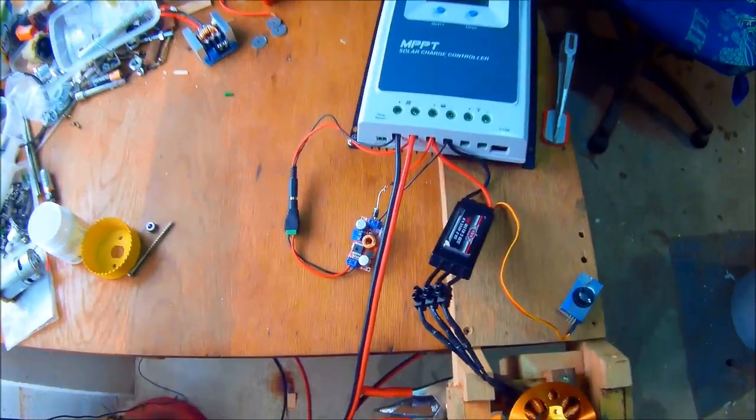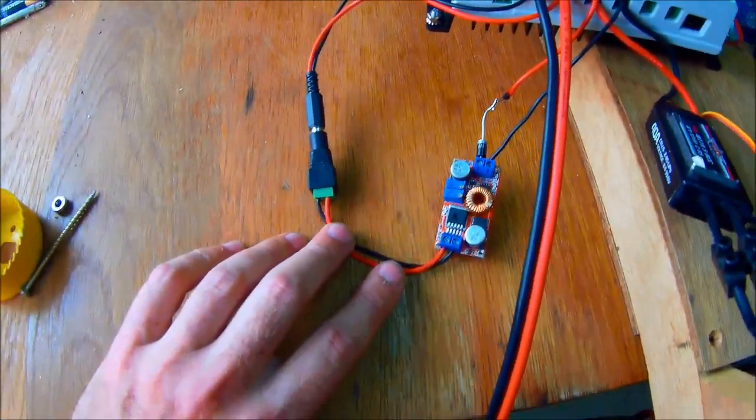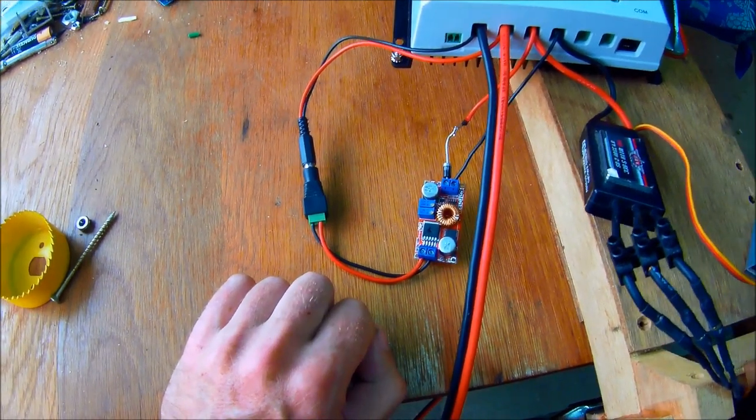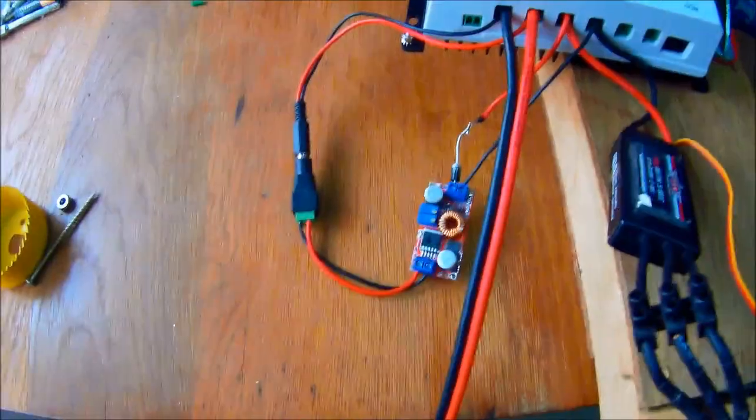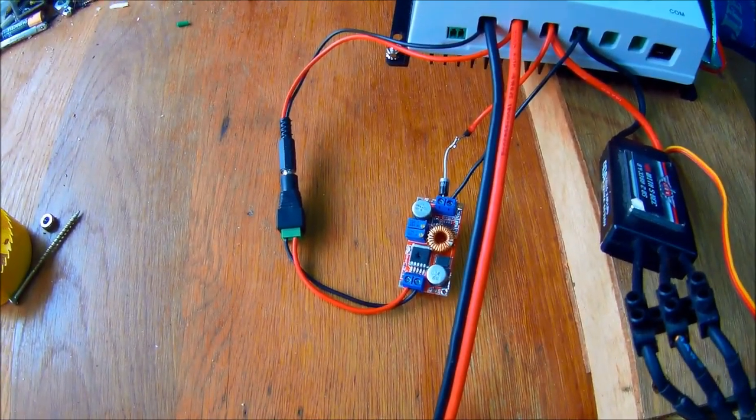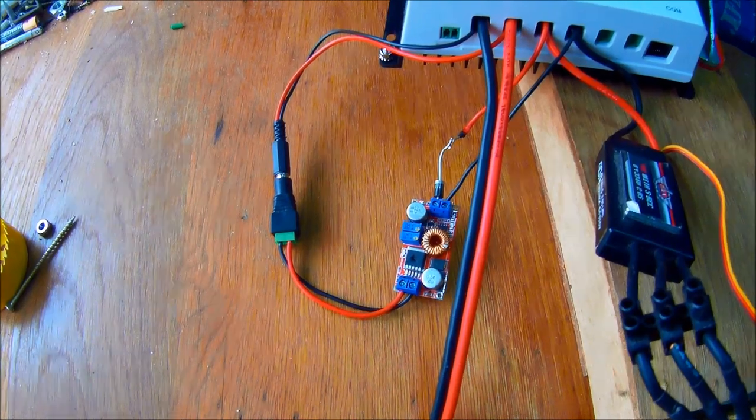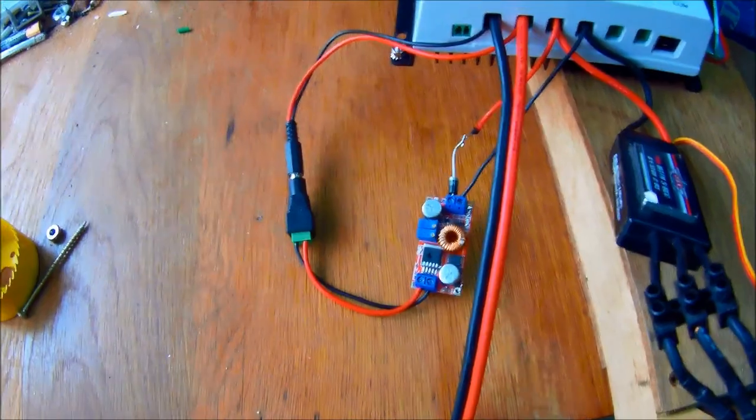Now the part that failed was this small buck converter. You can perhaps make out that there's an entire chunk blown clean out of its switching MOSFET, and that suggests that it was totally overloaded. Today I'm going to experiment and see how that happened.